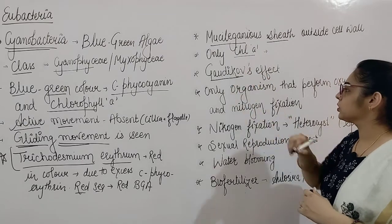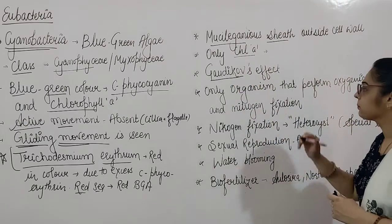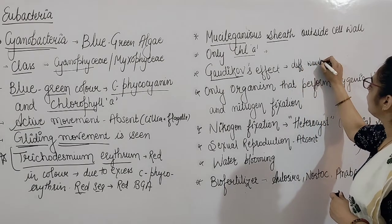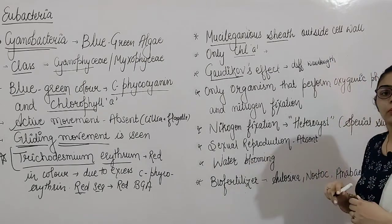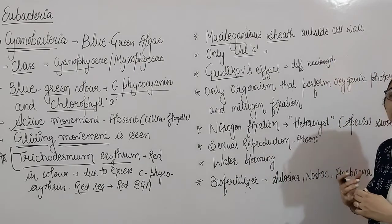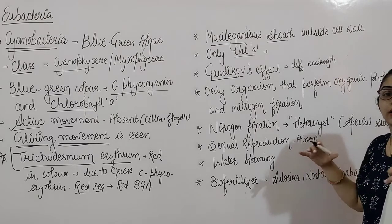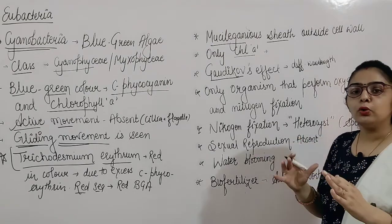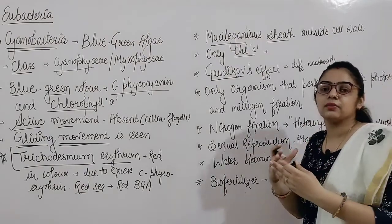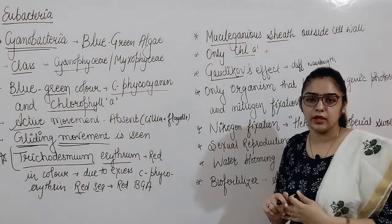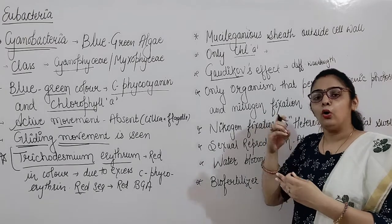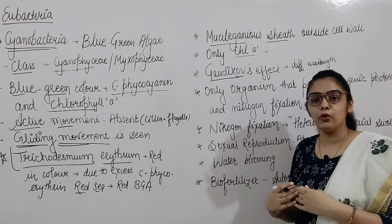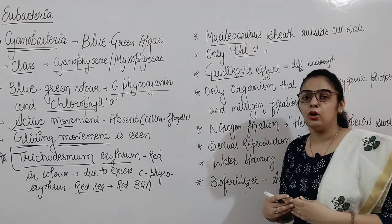Blue-green algae shows the Garikoev's effect. What is this Garikoev's effect? Blue-green algae grows in different wavelengths of light and absorbs those different wavelengths. At different wavelengths, it produces different colors. There are different wavelengths of light — 720, 460, and so on. Blue-green algae absorbs each wavelength and produces a different color at each. This effect is called Garikoev's effect because it was first observed by Garikoev.